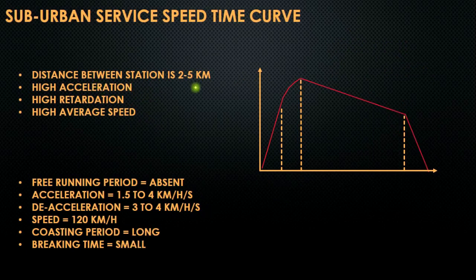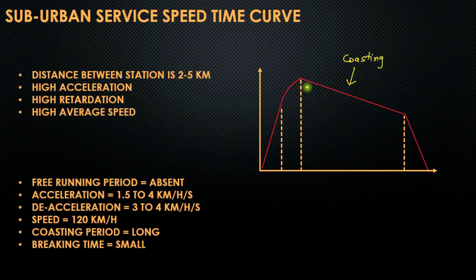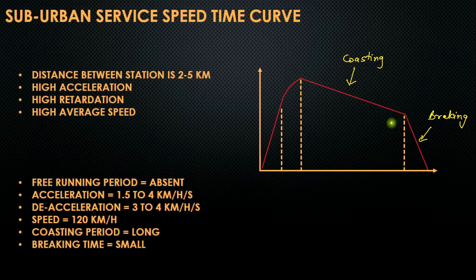Now let us discuss suburban services. The speed-time curve for suburban services looks different — you can clearly differentiate between urban and suburban curves. The coasting period in suburban services is longer compared to the braking period. In the coasting period, electric locomotives are not drawing any electrical power from the source, so they cover this distance without fetching any power. To make them more efficient, the locomotive must run for a longer period in the coasting zone.